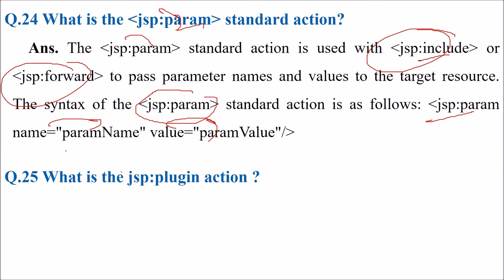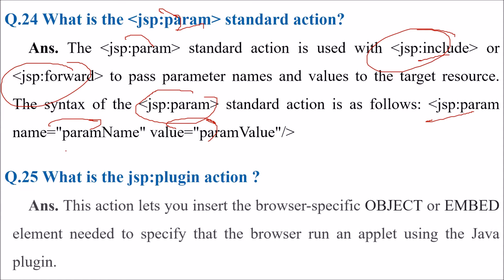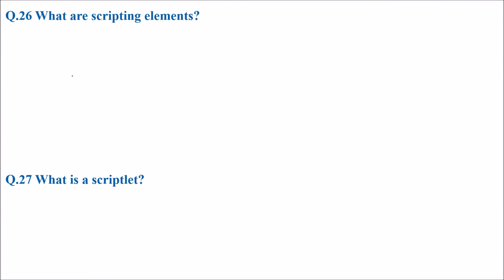What is the JSP plugin action? This action lets you insert the browser-specific object or embed element needed to specify that the browser run an applet using the Java plugin.